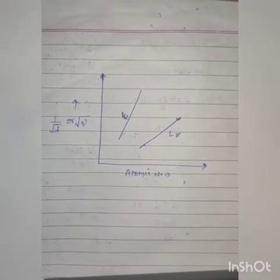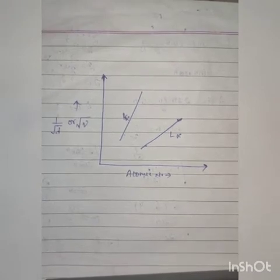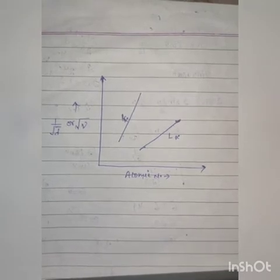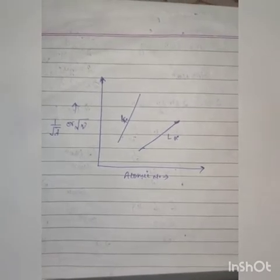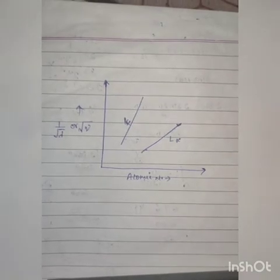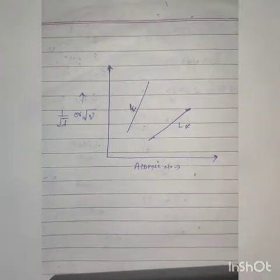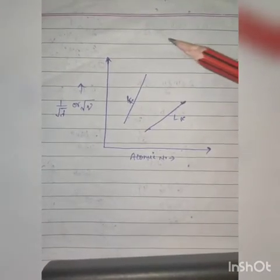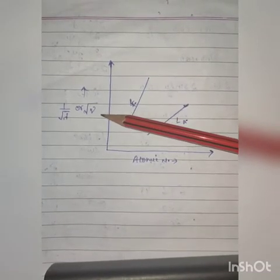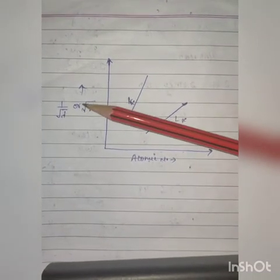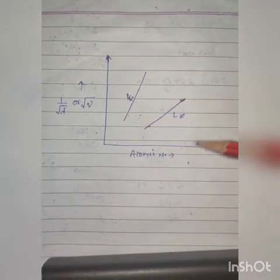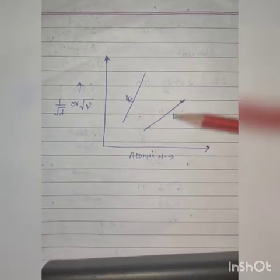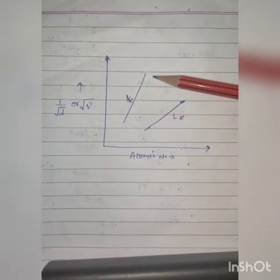On plotting the graph between the square root of the frequency of any particular line — say k-alpha — and the atomic number Z of the element emitting the line, a straight line is observed. The variation of root-nu, that is the square root of the frequency, versus atomic number Z for the k-alpha lines gives a straight line.